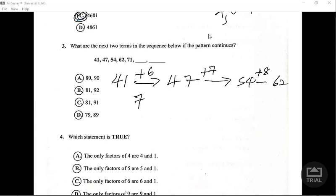Already added 9, so the next one would be to add 10 to 71 which is 81, and then to add 11 because each time we're adding an additional one. So our answer would be 81 and 92.